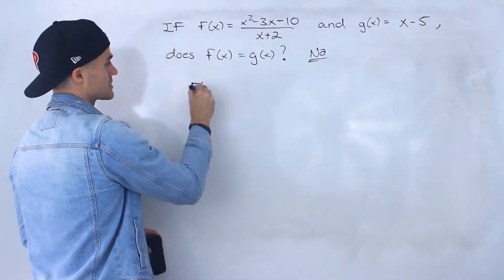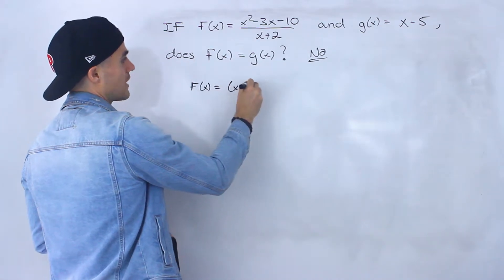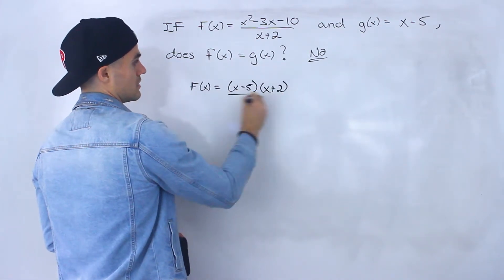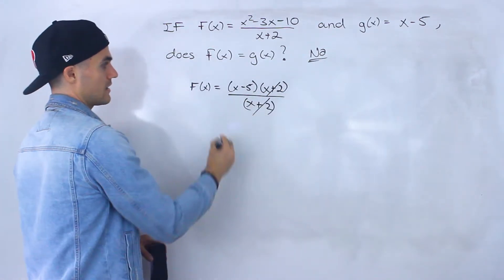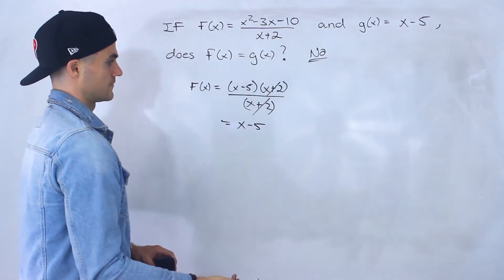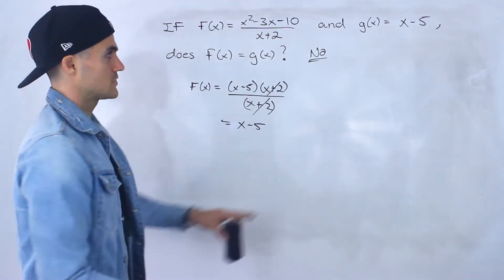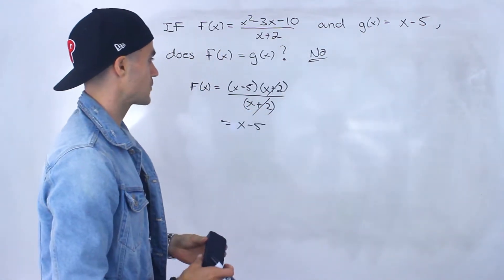Now for f(x), notice if we factor the top we'll have (x - 5)(x + 2), and this is over x + 2. So notice the (x + 2)s cancel out and we're just left with x - 5, which is the same as this function here.